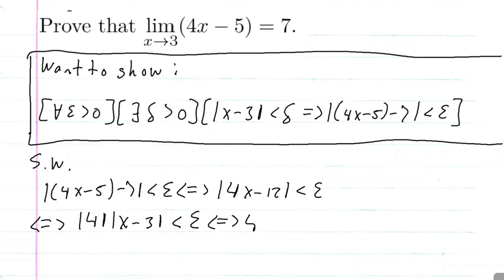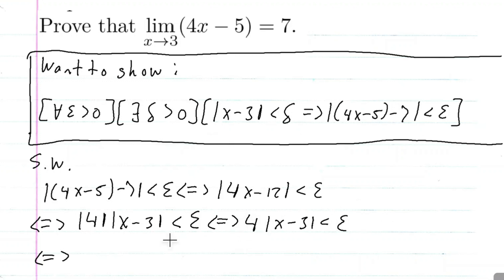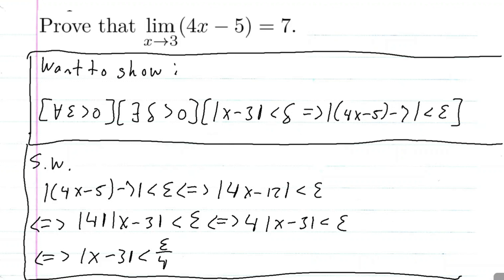The absolute value of 4 is just 4, so 4 times the absolute value of x minus 3 is less than epsilon. To figure out what delta I should pick, I'm really close to having x minus 3 is less than something, but I have that 4. So I can divide both sides by 4 to get x minus 3 is less than epsilon over 4. So it looks like I found my delta — x minus 3 is less than epsilon over 4.